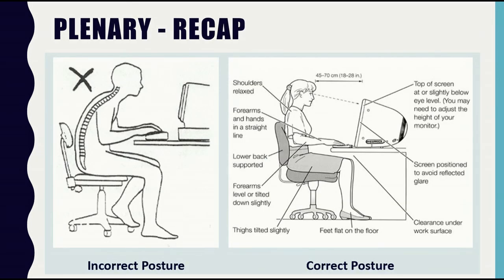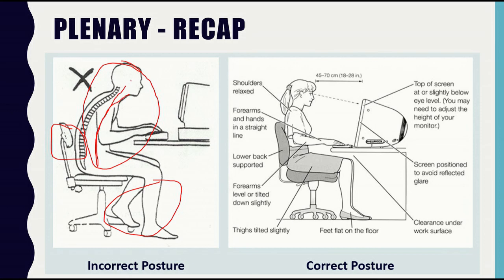As a plenary, let's recap the correct posture to follow during prolonged use of ICT. Most of us are used to sitting with our back not against the rest, legs at an improper angle, and using the spine in the wrong way — don't be like this. Instead: eyes should be at a comfortable angle, back should be straight, legs at a correct 90-degree angle, feet flat on the floor, hands at the correct angle with the keyboard, and shoulders must be relaxed.